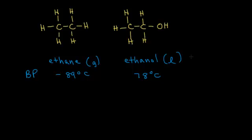These large differences in boiling points between these two molecules can be attributed to the intermolecular forces that are present. If two molecules of ethane are interacting, really the only intermolecular force holding those molecules together would be London dispersion forces, which are the weakest of the intermolecular forces. So it's relatively easy to pull apart two ethane molecules, which accounts for the very low boiling point.